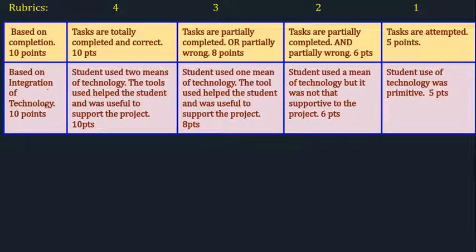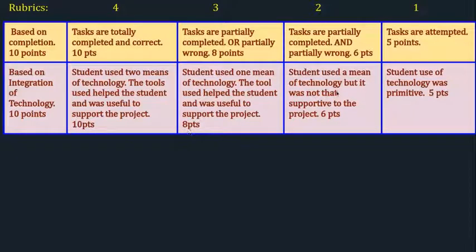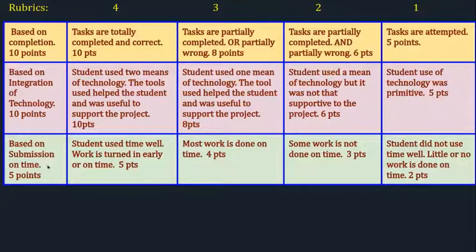Based on integration of technology, you get up to 10 points. Students used two means of technology and the tools were useful to support the project — 10 points. Students used one means of technology and the tools were helpful and useful to support the project — 8 points. Students used a means of technology but it was not supportive to the project — 6 points. And student use of technology was primitive — 5 points.